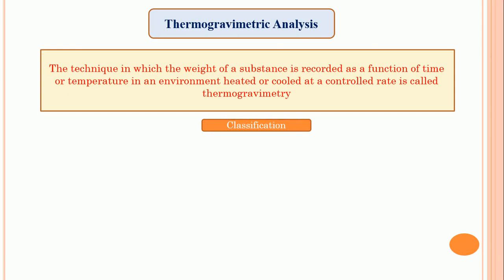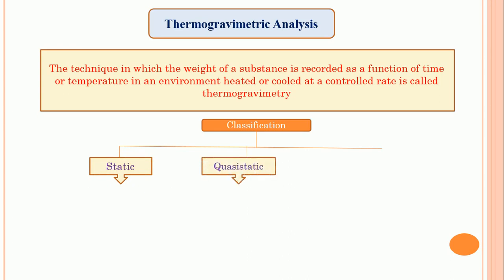Thermogravimetric analysis is classified into three types. The first classification is static thermogravimetry, the second is quasi-static thermogravimetry, and the third is called dynamic thermogravimetry.